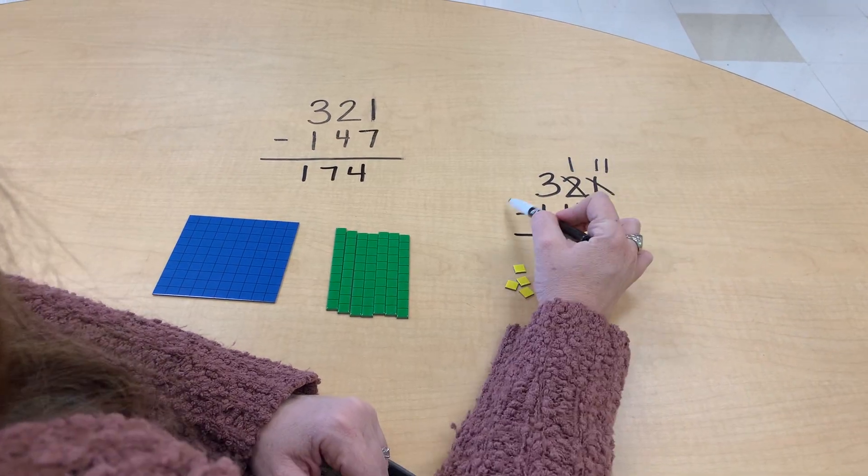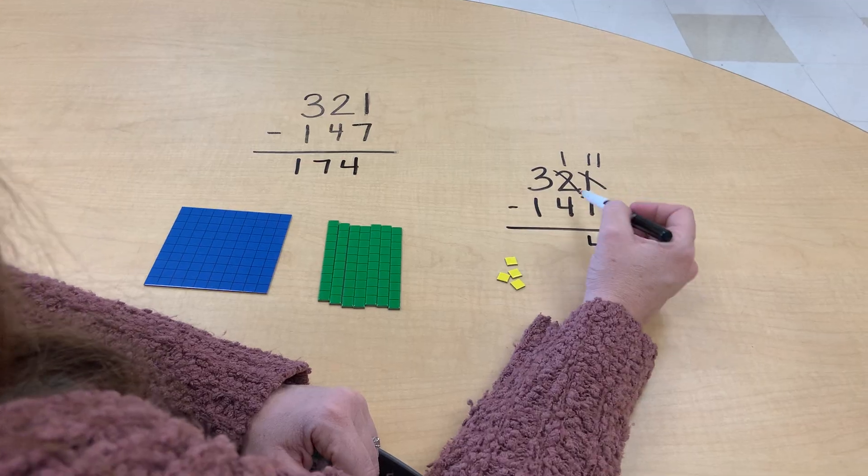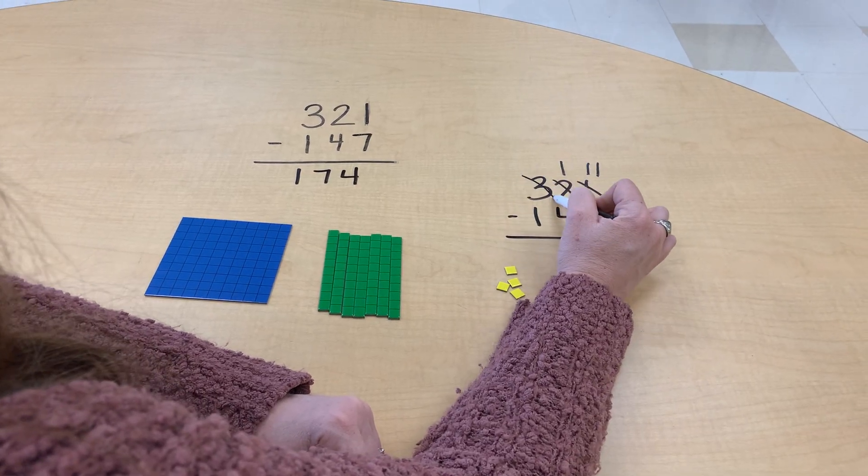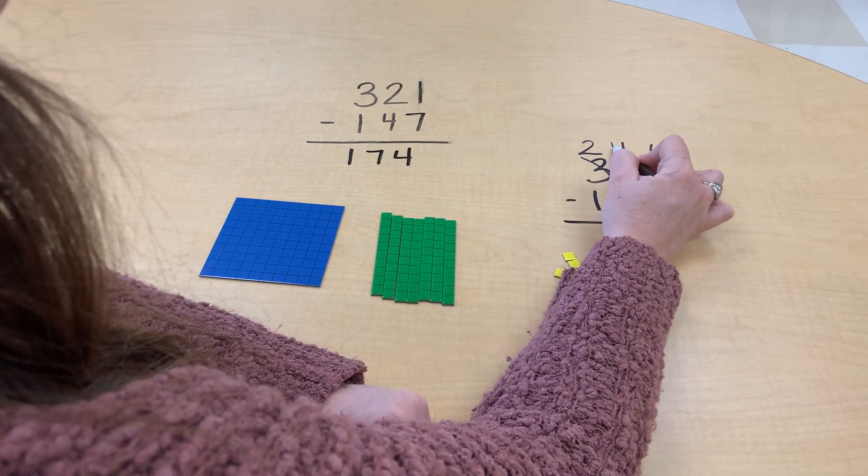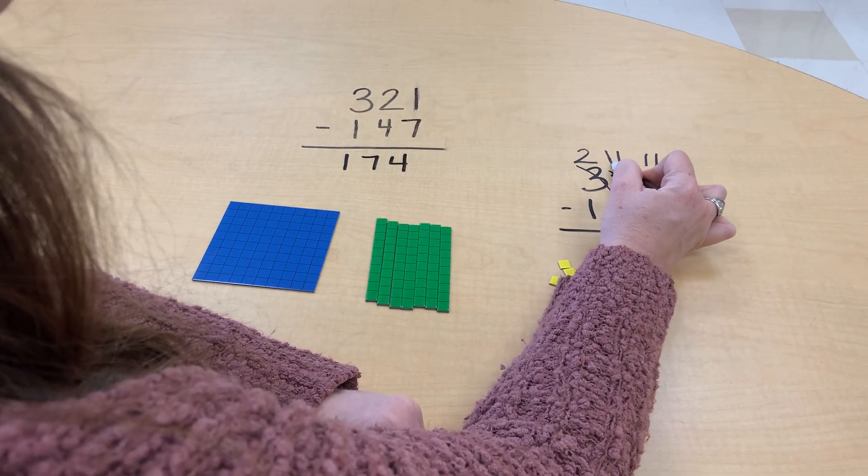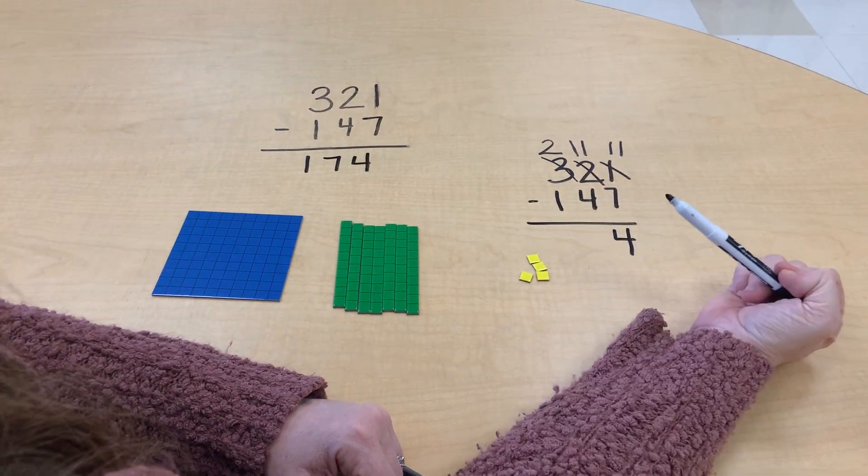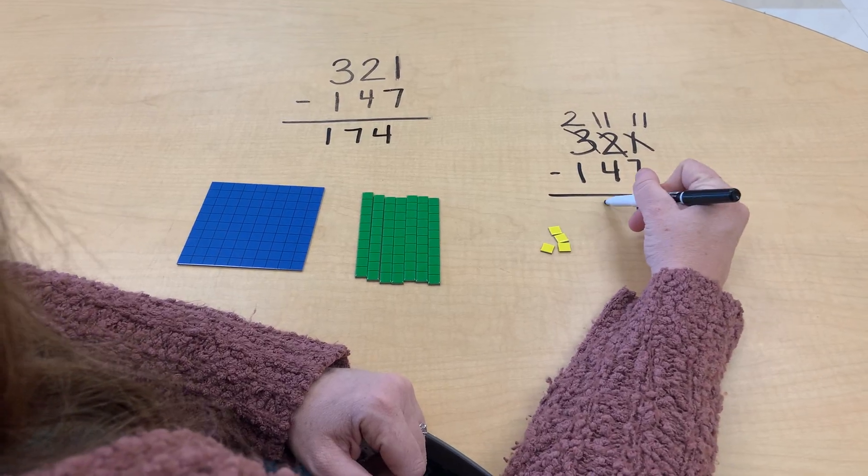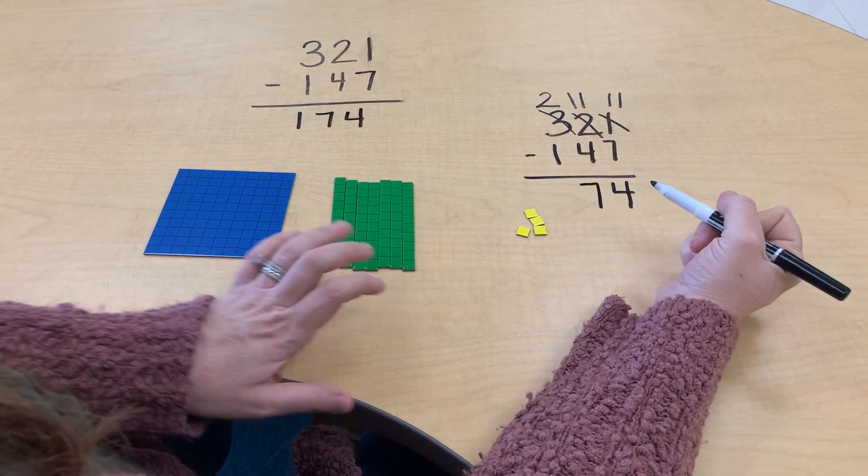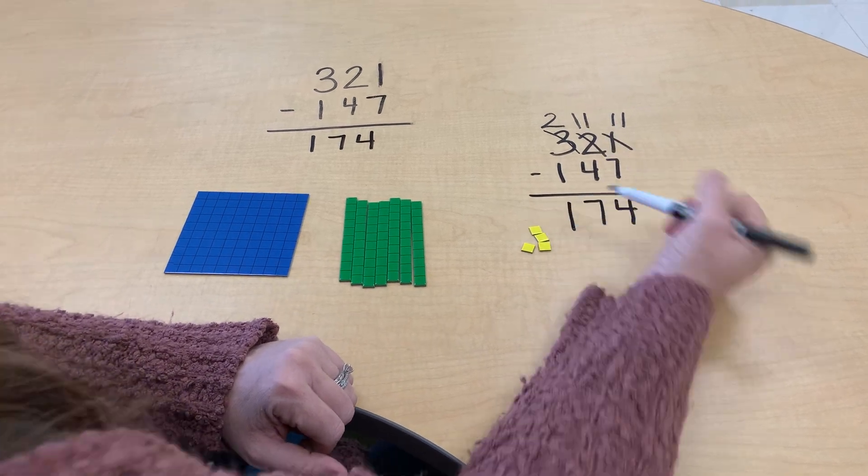Now I have one minus four. I cannot take four from one, so I have to regroup from my hundreds. I'm going to take one of the hundreds and move it over to the tens to make it ten tens. Now I have eleven minus four. Eleven minus four is seven. And two minus one is one.